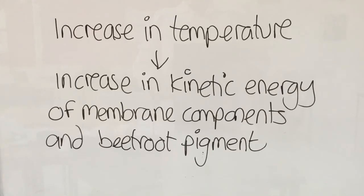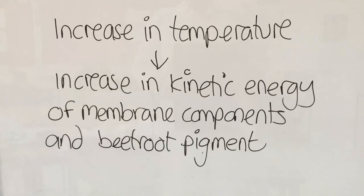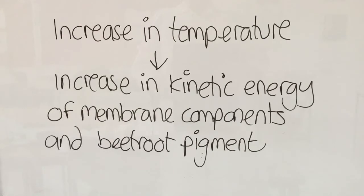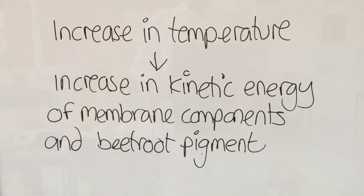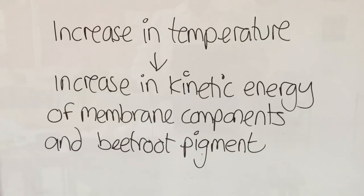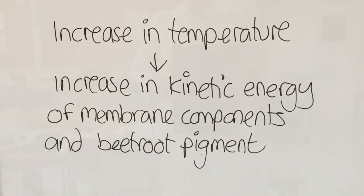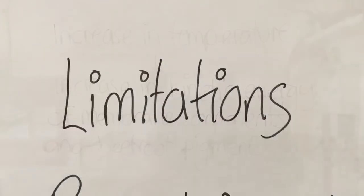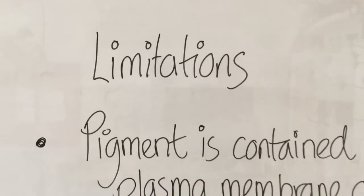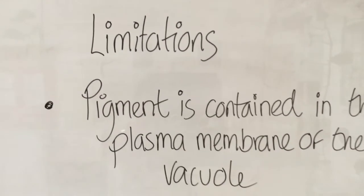Explaining the graph between 20 degrees and 60 degrees, as the temperature of the water increased the permeability of the membrane increased and that is because the molecules both of the cell membrane and of the pigment increased in their kinetic energy and as they moved more there were more opportunities for the pigment to escape through the plasma membrane.